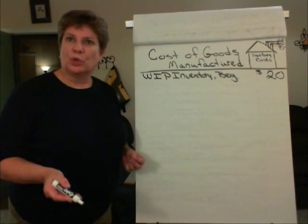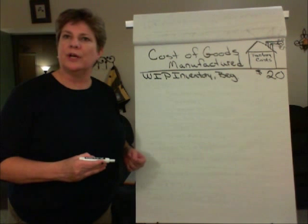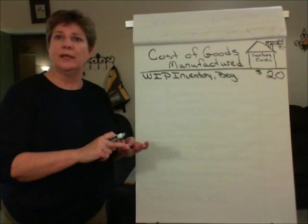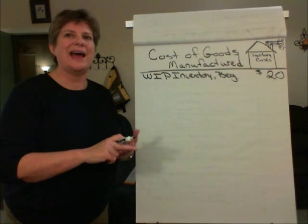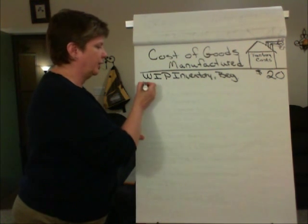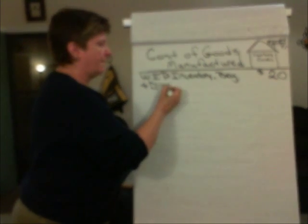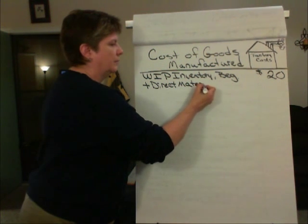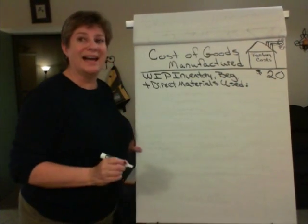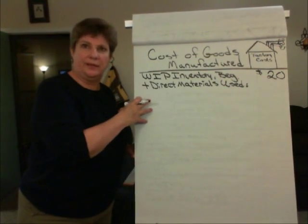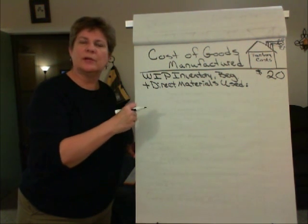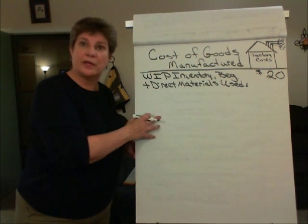What costs are added to work in process during the period as production occurs? The product costs are materials, labor, and manufacturing overhead. The first product cost added is usually direct materials used. To the beginning work in process, we're going to add direct materials used. Notice there's a colon here — we have to calculate this. To calculate direct materials used, we look at where direct materials came from: raw materials inventory. So that's where we go next.